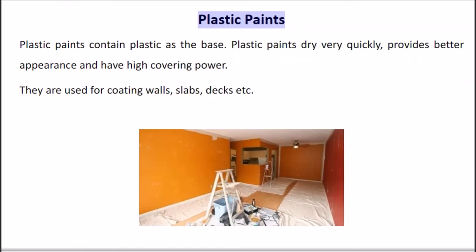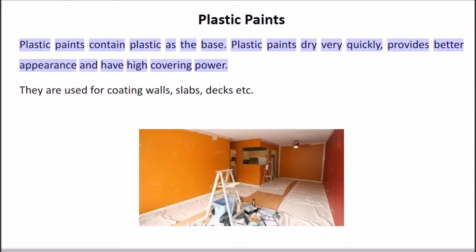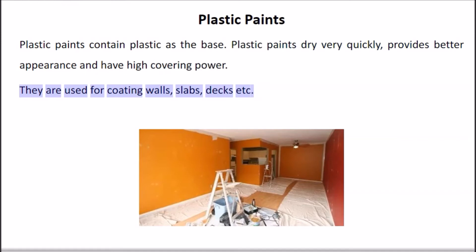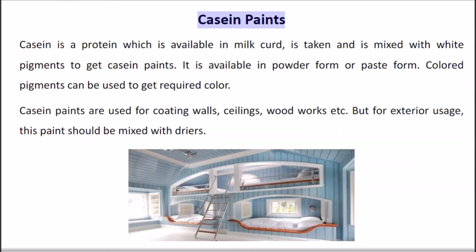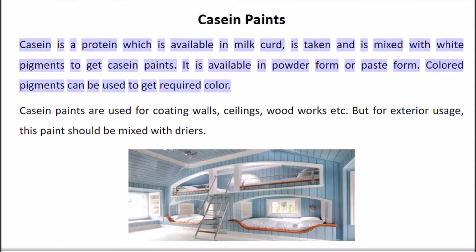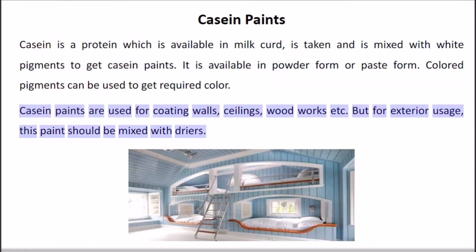Plastic paints contain plastic as the base. They dry very quickly, provide better appearance, and have high covering power. They are used for coating walls, slabs, decks etc. Casein is a protein available in milk curd; it is taken and mixed with white pigments to get casein paints. It is available in powder or paste form. Colored pigments can be used to get the required color. Casein paints are used for coating walls, ceilings, and woodworks.